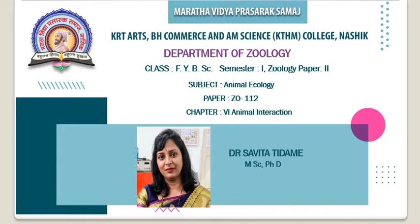In chapter three on population, we studied characteristics of population like density, natality, mortality, dispersal and dispersion, exponential and logistic growth, population regulation — density dependent and density independent — and even population interaction including Gause's principle with laboratory and field interactions.